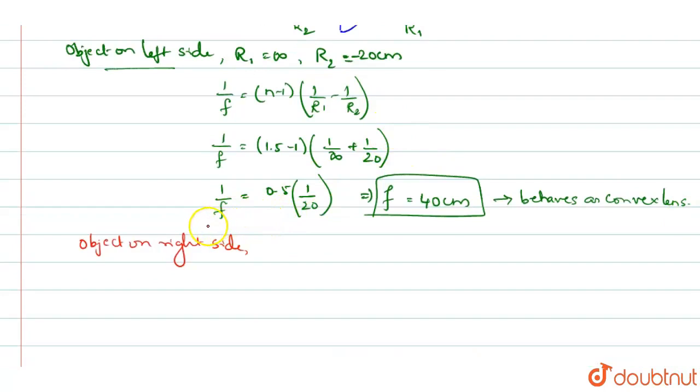For the same equation, we substitute new values of R1 and R2. Here, R1 = 20 cm and R2 = -∞. Substituting: 1/F = (1.5-1)(1/20 + 1/∞) = 0.5(1/20 + 0).